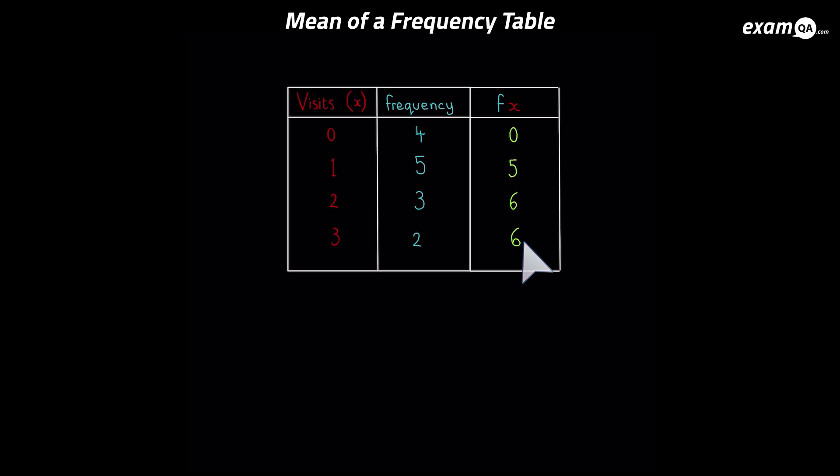Next thing, we're going to add up the fx's. Now that gives us our sum. And if you add them up, you get 17. And you can use a calculator to do that. So the sum is 17.